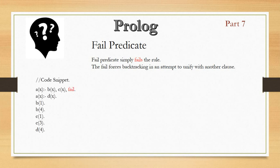Here I have written one code. There are two rules with predicate A, taking X as a variable argument. In the first rule, A(X) has B(X), C(X), and fail with a full stop. That means these are three different statements: B(X) is one statement, C(X) is another, and fail is another. All three need to be true. Since fail itself always makes the rule fail, whether B(X) and C(X) are both true, the whole statement still fails because at the end we have written fail.